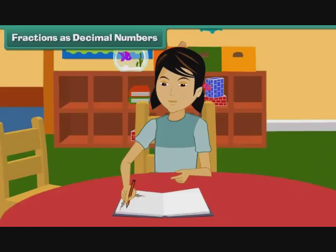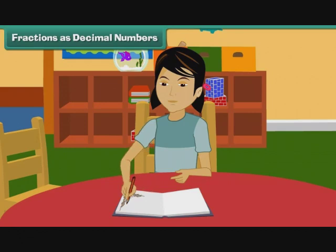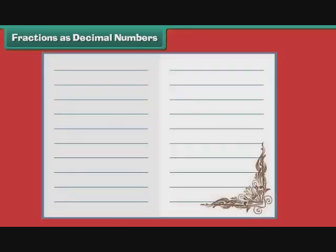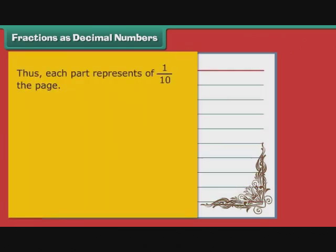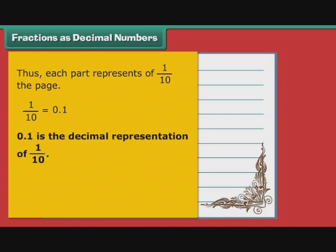Fractions as Decimal Numbers. Arpita is busy decorating the pages of her personal diary. The lines on a page of her diary divide the page into 10 equal parts. Thus, each part represents 1 by 10 of the page. 1 by 10 can also be written as 0.1. Therefore, we can say that 0.1 is the decimal representation of 1 by 10.